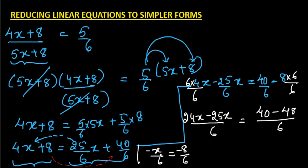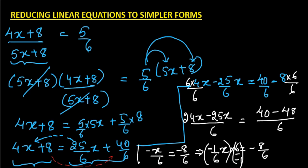We can write −x/6 as (−1/6)x = −8/6. Multiplying both sides by the reciprocal of −1/6, which is −6, the 6s cancel and the negatives cancel, leaving x = 8.